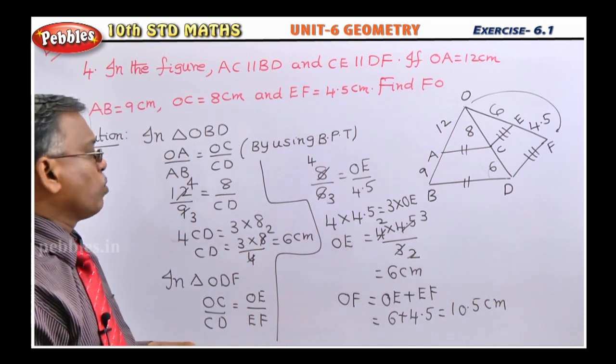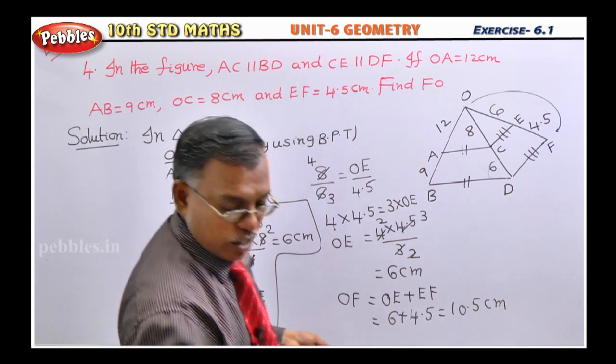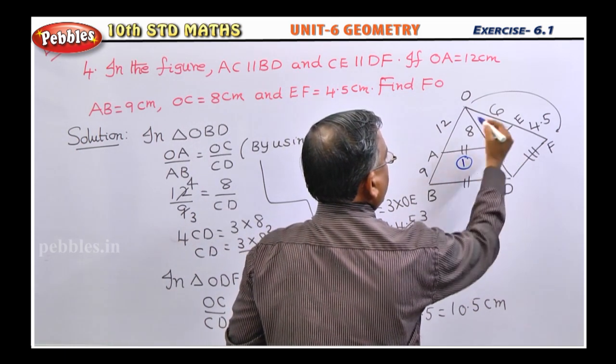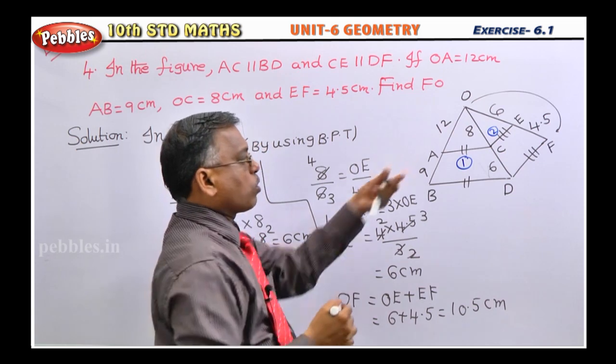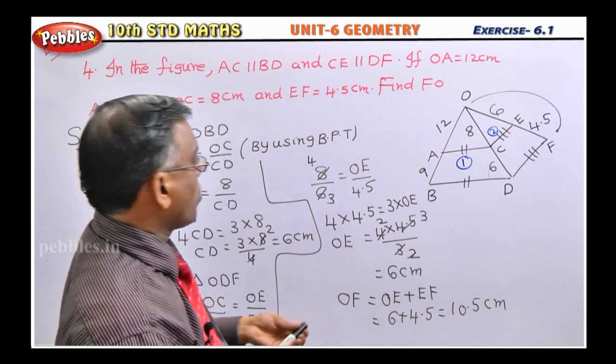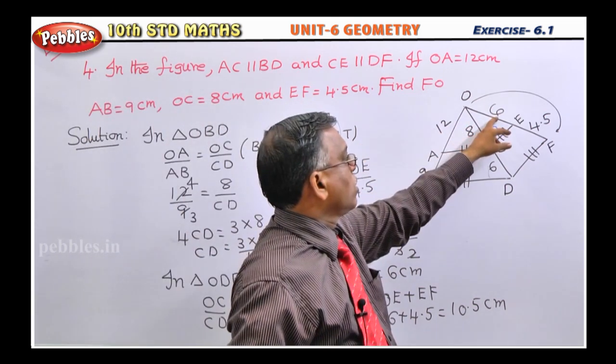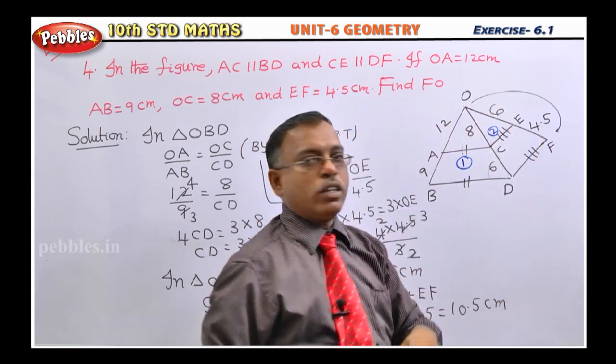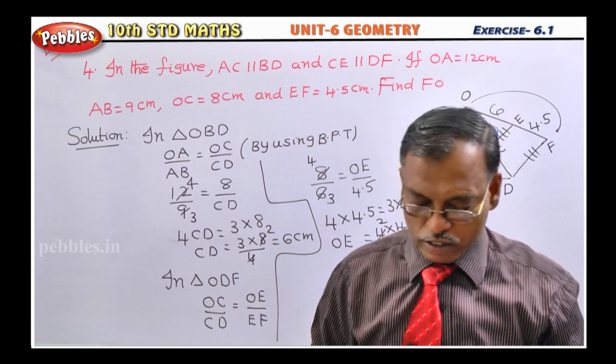So, very easy. Only thing is in first triangle, you have to apply BPT in this triangle. In second triangle, you have to apply BPT. So, that unknown quantities you will get. So, once you get this unknown quantity, OF you will get by adding OE and EF. That's it. Very simple problem. Okay. We will see the next problem.